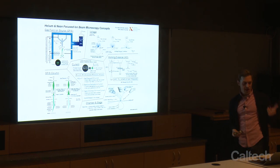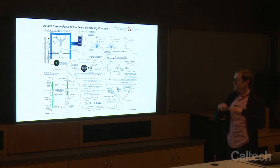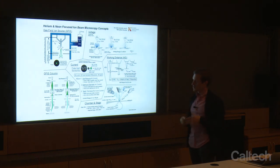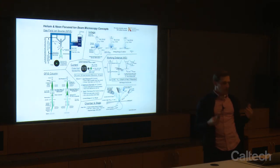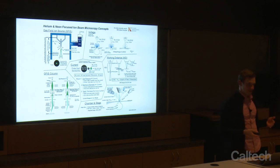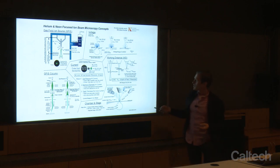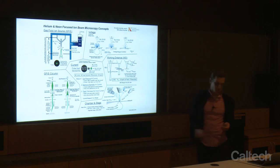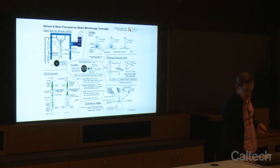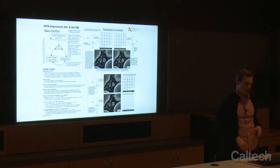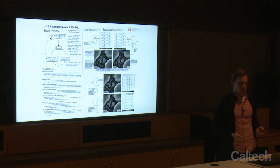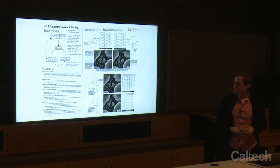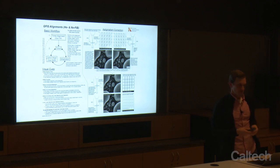In front of you, you have two handouts. One covers the physical concepts underlying what we call the GFIS column — gas field ion source — and all the parameters associated with using the helium microscope. The other handout pertains to the alignments we do when we use the GFIS column and system, for both helium and neon, which come from the same optical axis.